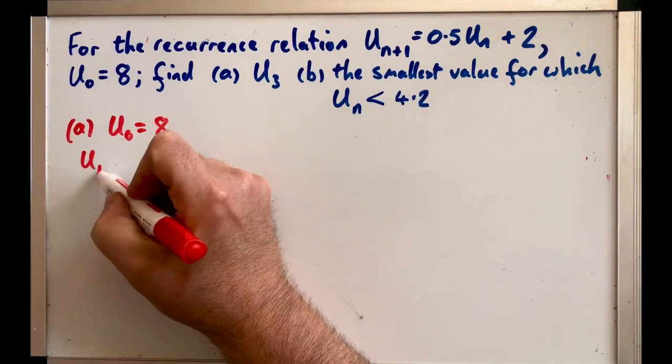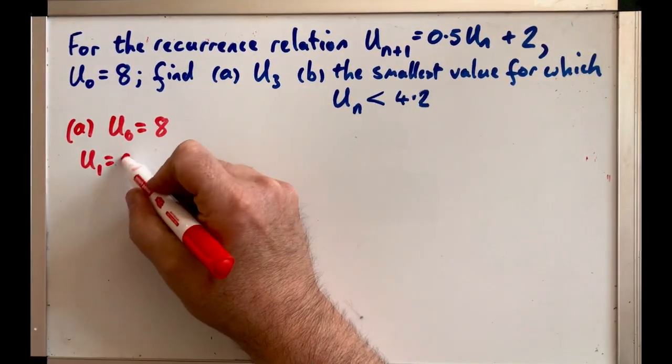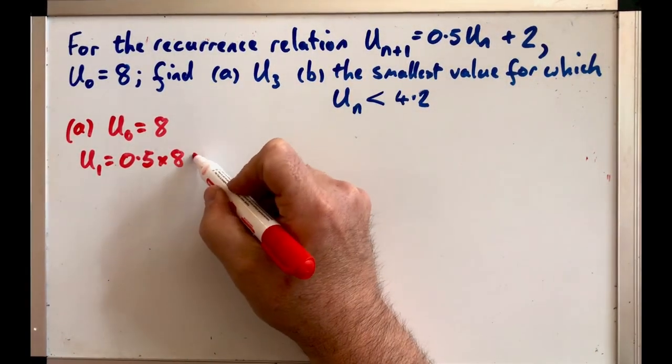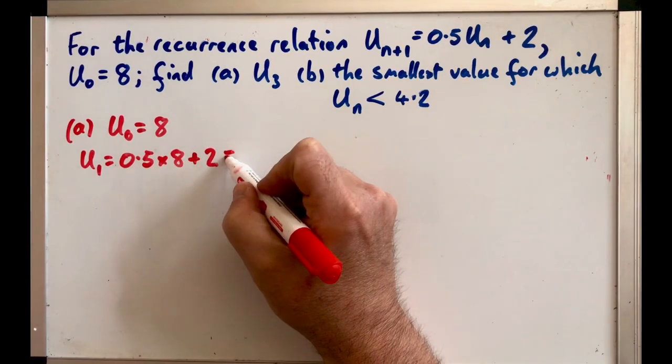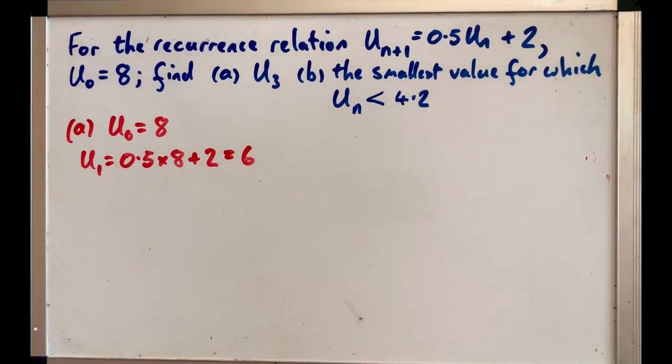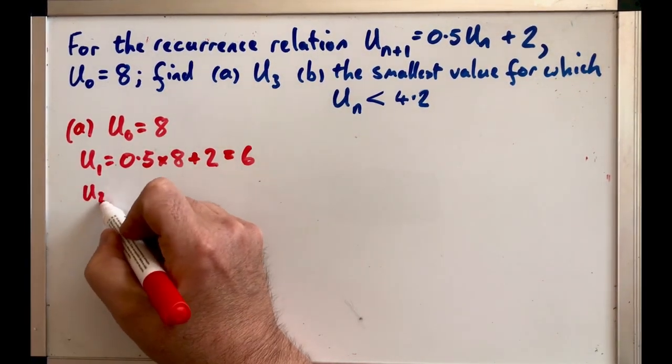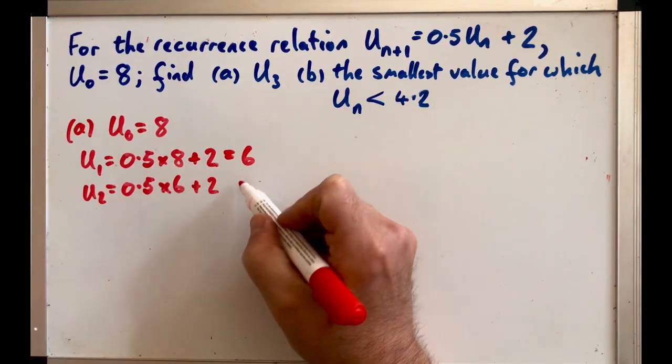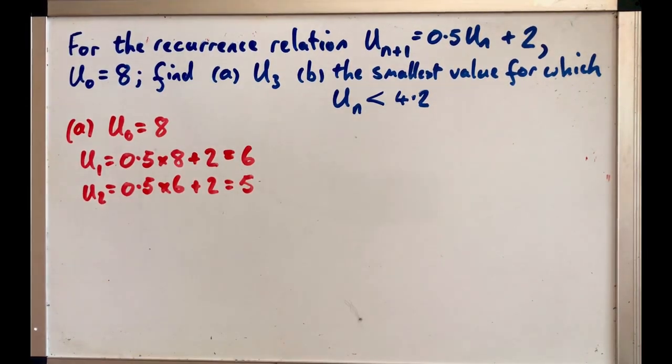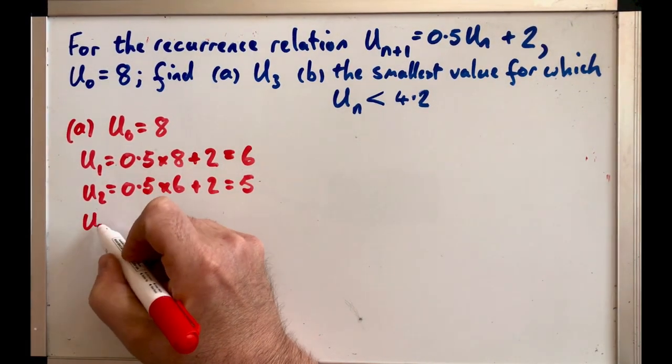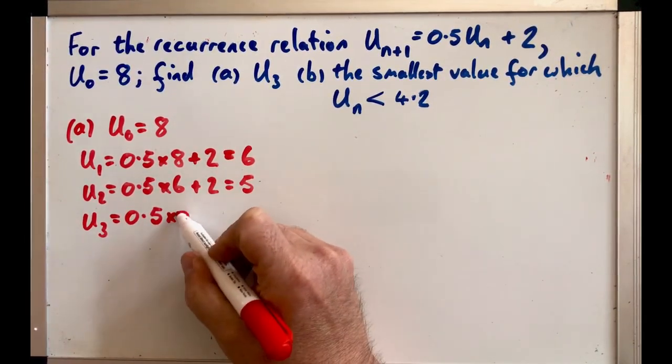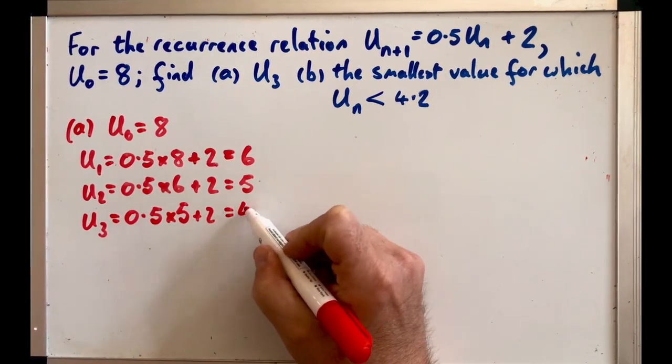But U₁ is going to be 0.5 times U₀ which is 8 plus 2, and if we work that out it gives us 6. So we've got that U₁ is 6 and we just repeat the process putting in 6 next time. So U₂ will be 0.5 times 6 plus 2 which gives you 5, and then lastly we wanted U₃ so that's 0.5 times 5 plus 2 gives me 4.5.